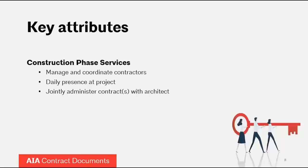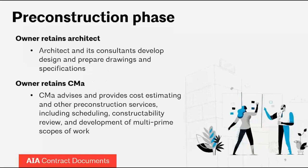In the construction phase, the CM as advisor is going to manage and coordinate the contracts. Oftentimes this delivery model is used when you have multiple prime contracts and multiple trade contractors. The CM as advisor is going to have daily presence on the project — not just occasional site visits as the architect or engineers might do. Under normal circumstances, the CMA will have a presence at a job trailer on site so they can handle issues in real time. They are going to jointly administer the contract — either the general contract or multiple trade contracts — along with the architect.